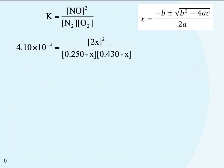After getting equilibrium concentrations with respect to x, we write the law of mass action and plug in what's in the equilibrium row cells. Note that I have 2x in the numerator which I then square. The 2x comes from stoichiometric ratios; the squared is part of the law of mass action—these are separate. On the bottom I put in 0.250 minus x and 0.430 minus x for the N2 and O2 concentrations, along with the given k value.